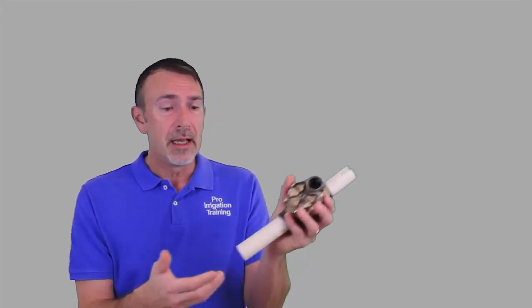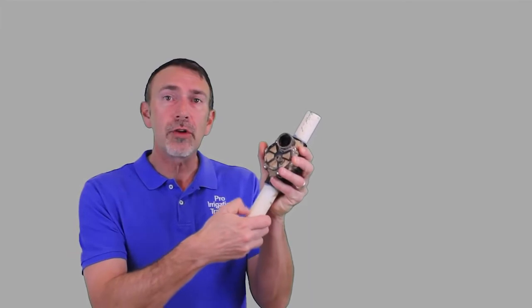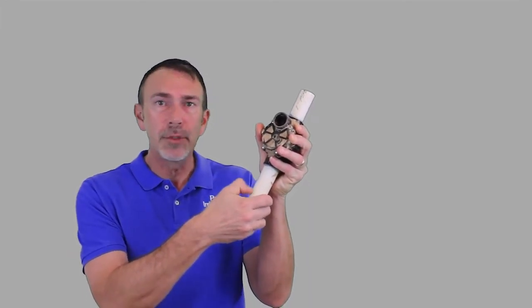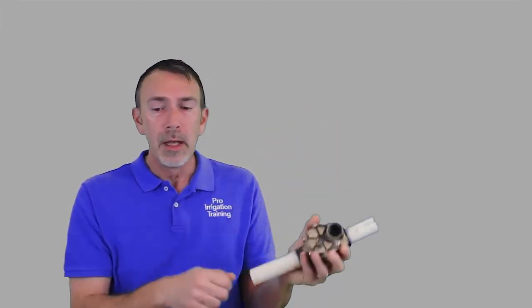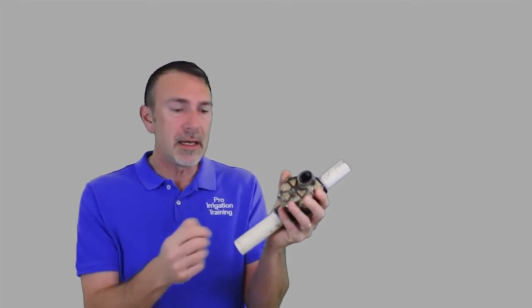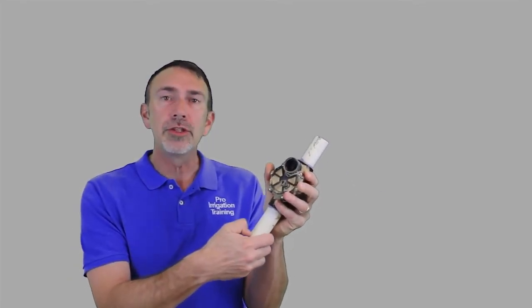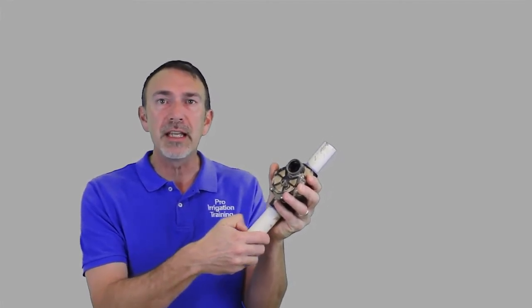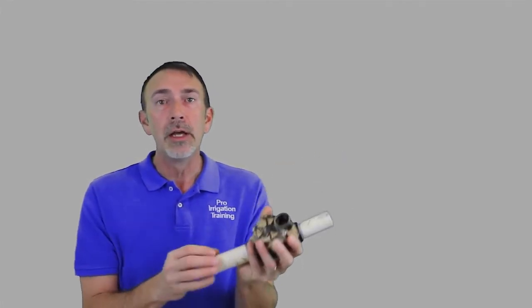Here's an experiment that you can do: take a piece of PVC and take your fingernail and see if you can scrape any of that PVC away. Not possible, it's a hard product. But take some of this purple primer and let it sit there for just a minute and then take your fingernail and you can scrape away the outside surface of that PVC. It softens it up, so we only want this primer going exactly where we place it.